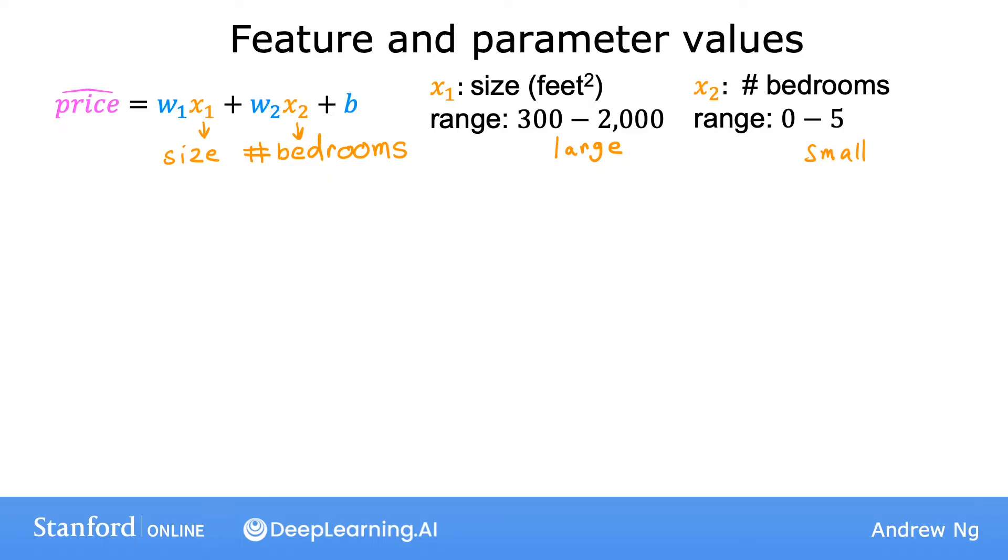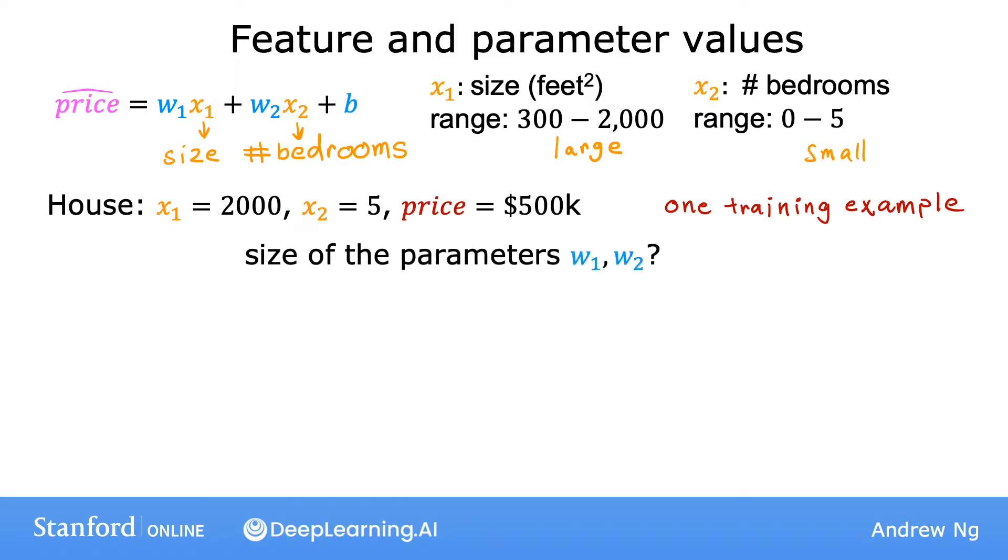Now let's take an example of a house that has a size of 2000 square feet, has 5 bedrooms, and a price of 500k or $500,000. For this one training example, what do you think are reasonable values for the size of parameters w1 and w2?